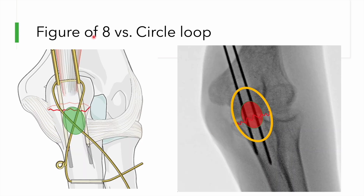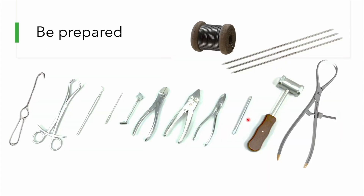A figure-of-8 loop is preferred over a circular loop because with the figure-of-8, maximum tension occurs in the zone closest to the center of the tensile surface. With a circular wire, this area remains without adequate tension and the opening may not be controlled by the loop — whereas the figure-of-8 ensures maximum tension where it is needed.